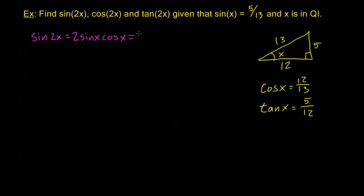Sine 2x is going to be 2 times sine x which is 5 thirteenths, times cosine x which we found to be 12 thirteenths. This gives us, in my denominator, 169. And in my numerator, I have 2 times 5 is 10, times 12 is 120.